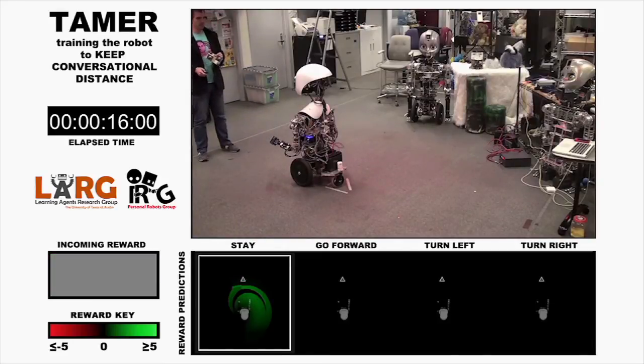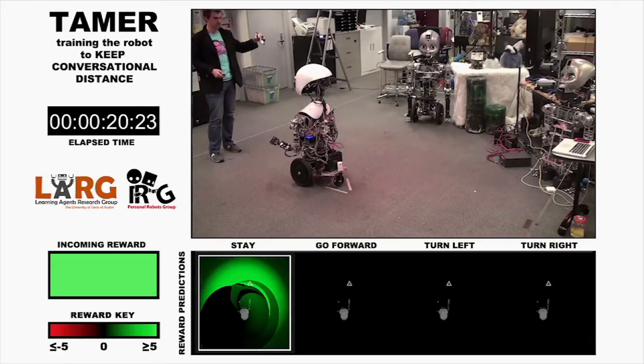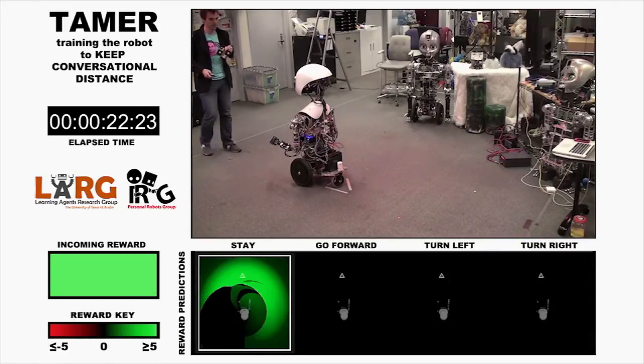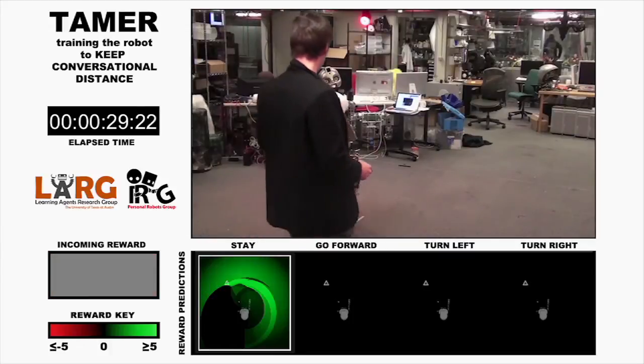As the trainer, I first paint the stay action, giving positive reward at a wide range of marker positions that are roughly at conversational distance. Satisfied with my painting of stay, I then move the marker to a location at which Nexi should not stay and give negative reward.